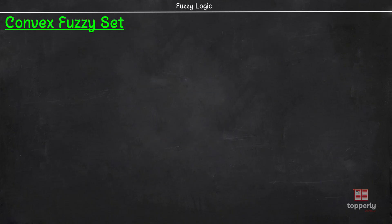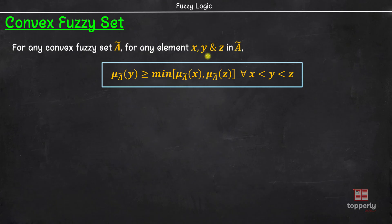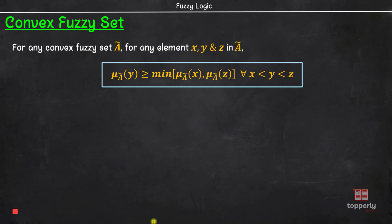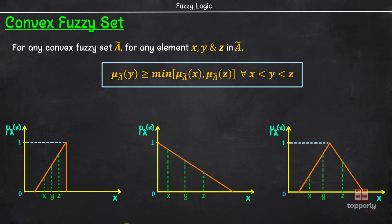Next, we will learn about convex fuzzy sets. If for any element X, Y and Z in a fuzzy set A, the relationship X less than Y less than Z implies that the membership value of Y in fuzzy set A is greater than or equal to the minimum of the membership value of X in A and the membership value of Z in A, then fuzzy set A is said to be a convex fuzzy set. In simple words, a convex fuzzy set is described by a membership function whose membership values are strictly monotonically increasing, or strictly monotonically decreasing, or strictly monotonically increasing then strictly monotonically decreasing with increasing values for elements in the universe.